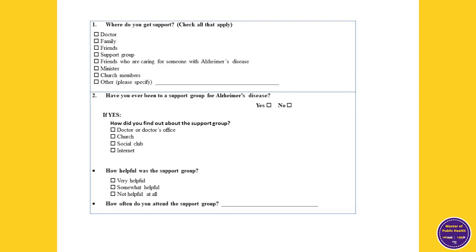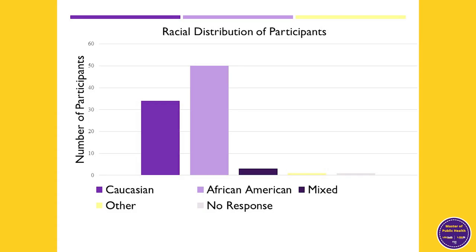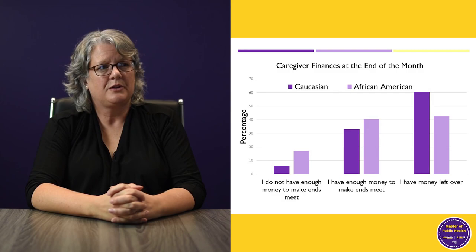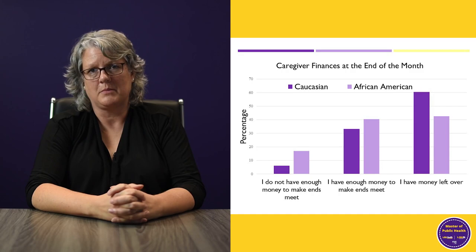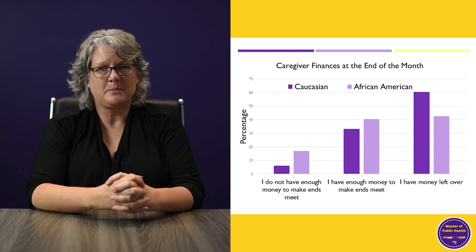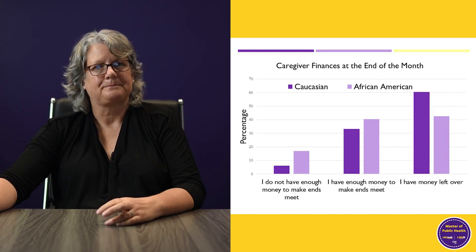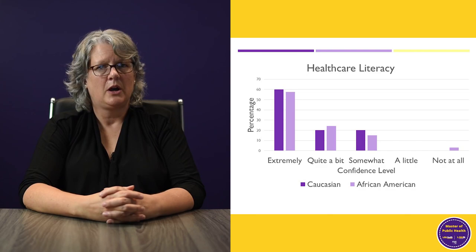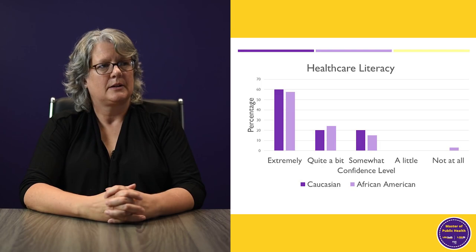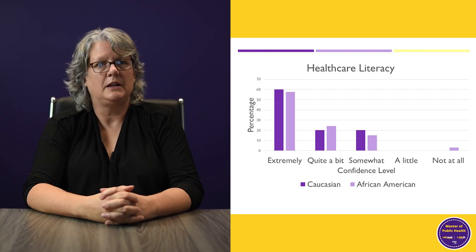Our participants were about 50% African-American — we were really targeting that population. To assess economic situation, we asked them how much money they had at the end of the month — whether they had money left over, just enough to make ends meet, or not enough. Most folks fell into the first two categories, so they were in pretty good shape economically. To assess literacy, we asked how comfortable they were filling out medical forms. Most people were pretty confident, so we took that to mean healthcare literacy was fairly high.